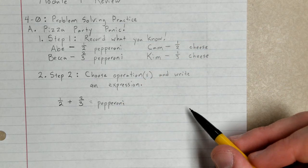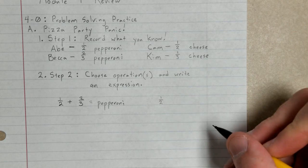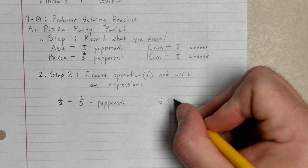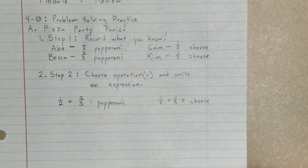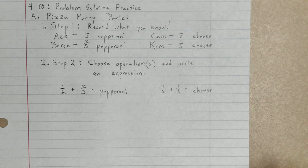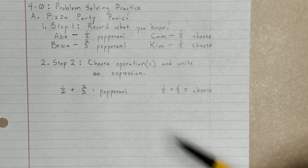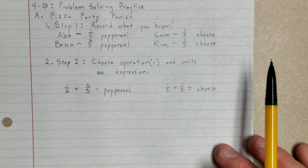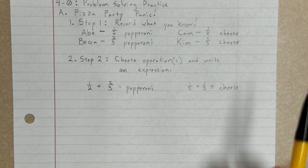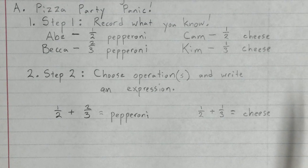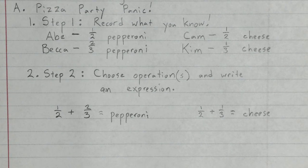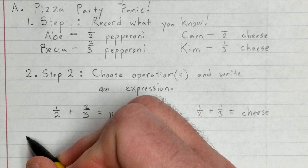On the flip side, if I add half a pizza for Cam to one third of a pizza for Kim, that should give me the amount of cheese I need. Now this is what I meant about it not super fitting in with module 4 - we're going to be doing some addition here, module 4 was multiplication and division, but that's okay. So we've chosen operations, we're going to add, and we have written an expression, actually two expressions.